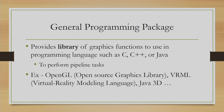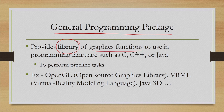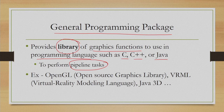The other type of software is the general programming package. Here we have libraries — libraries of graphics functions that are provided — and we can use those libraries with any programming language such as C, C++, or Java. These functions are meant to help a programmer perform pipeline tasks; in other words, they help the programmer implement the pipeline. An example is OpenGL, which stands for Open Source Graphics Library.